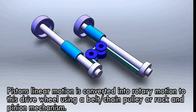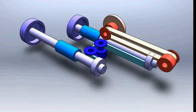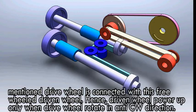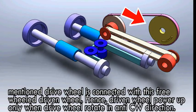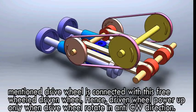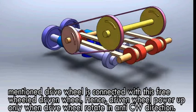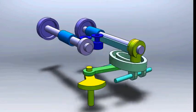Piston's linear motion is converted into rotary motion to this drive wheel. The mentioned drive wheel is connected with this free-wheeled driven wheel. Hence, the driven wheel powers up only when the drive wheel rotates in anti-clockwise direction.